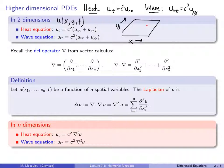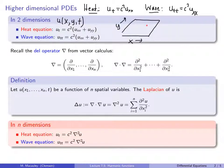Let's recall the del operator from vector calculus. That was a vector of differential operators. If you take del and dot it with itself, you get this curious thing: the sum of the second derivatives. This is an operator you could apply to a function u, and you would get the sum of the second derivatives of u.